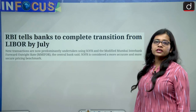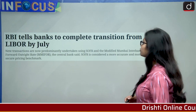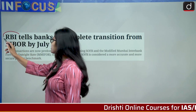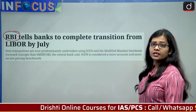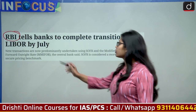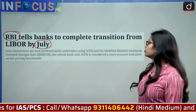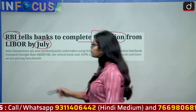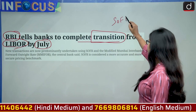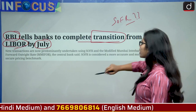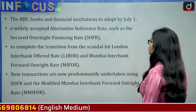This news has been taken from the Indian Express: 'RBI tells banks to complete transition from LIBOR by July.' The Reserve Bank of India has issued guidelines that by 30th June, banks should completely transition away from the LIBOR rate and move to the SOFR rate. We will be looking into what SOFR, LIBOR, and MIFOR are.